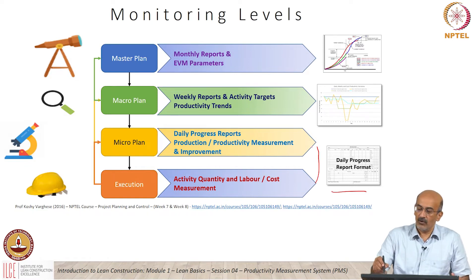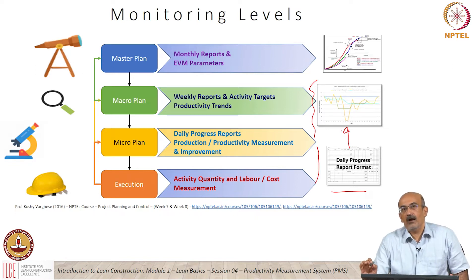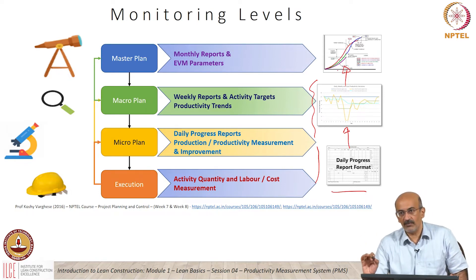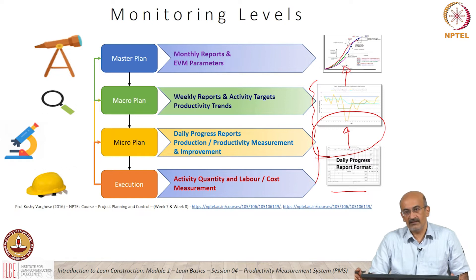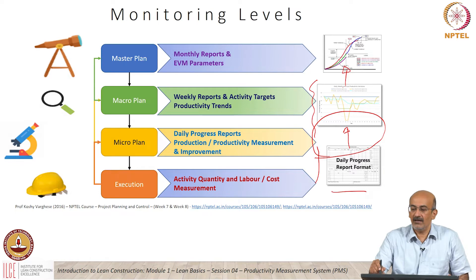From the daily progress reports, we generate all periodic reports. This raw data, once translated into a reporting format, enables micro-level control on the project. Using data from these reports, we feed back into the CPM to generate macro and project-level reports required for project control. The focus of this session is on what is happening at the micro level — how we monitor productivity on a daily, weekly, or monthly basis — because only with that level of control can we ultimately control the project.